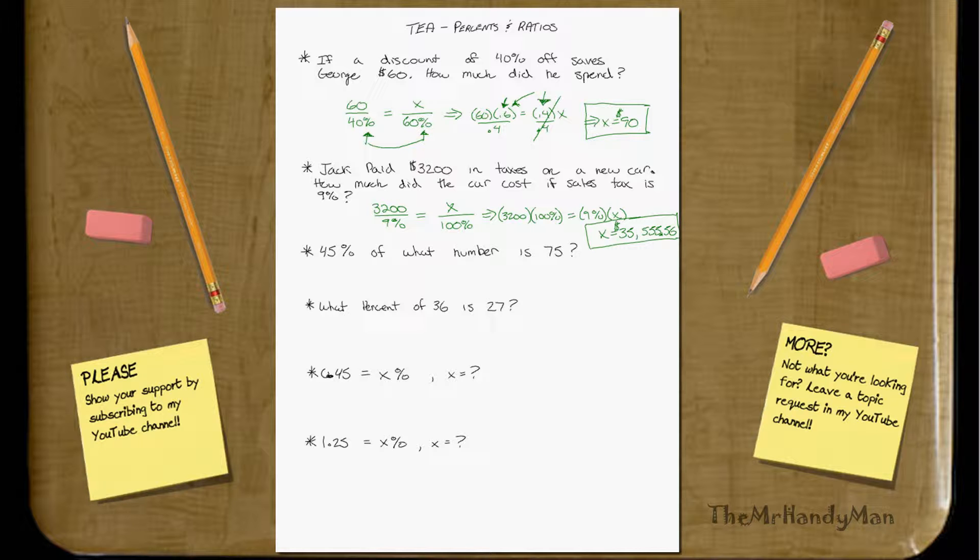45% of what number is 75? So we know that it's a number times 45% equals 75. You just divide that 0.45 over. Just divide it on over. And what you get is n equals a simple 166.67. I know you don't have a calculator, but you're going to get good at long division.